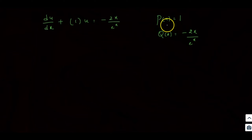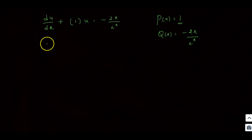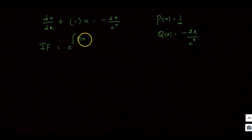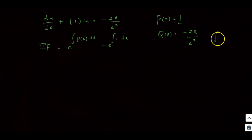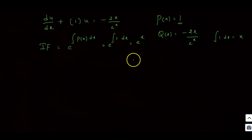P may be either a constant or a function of x; here it is constant 1. The integrating factor formula is e^(∫P(x)dx). So integrating factor = e^(∫1 dx) = e^x.